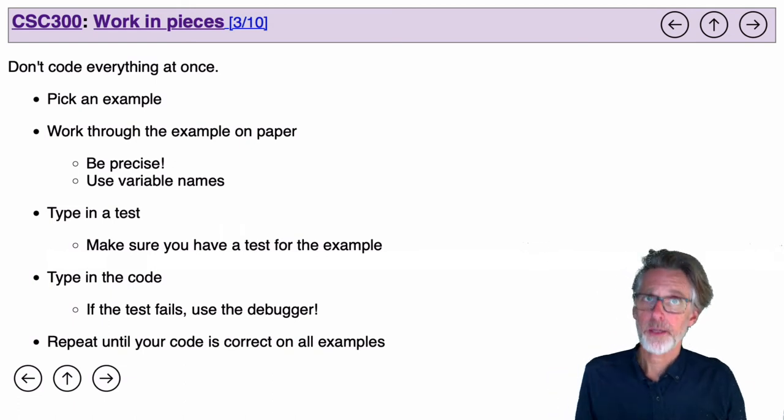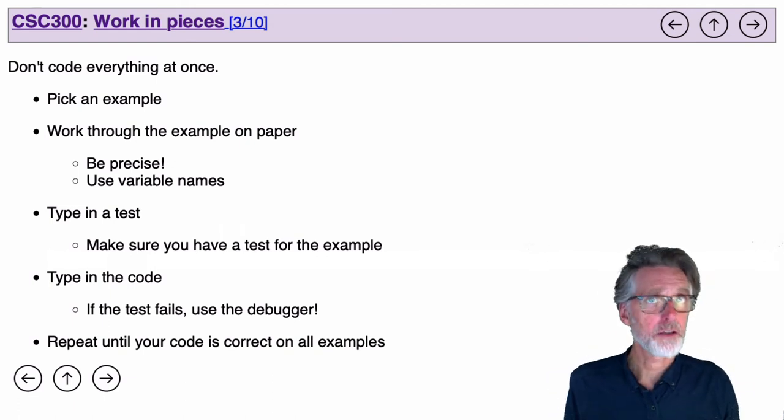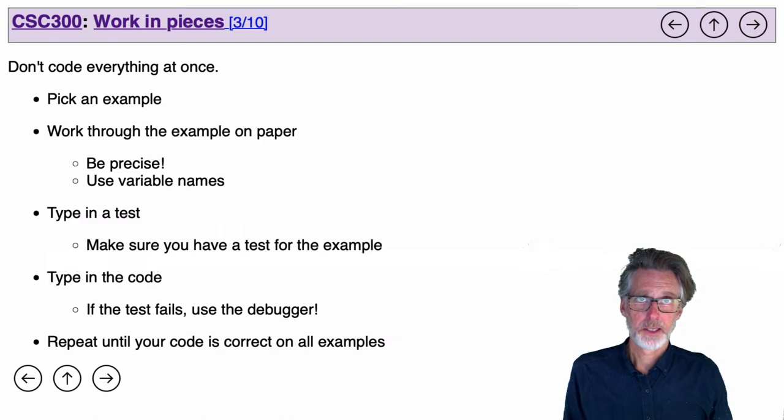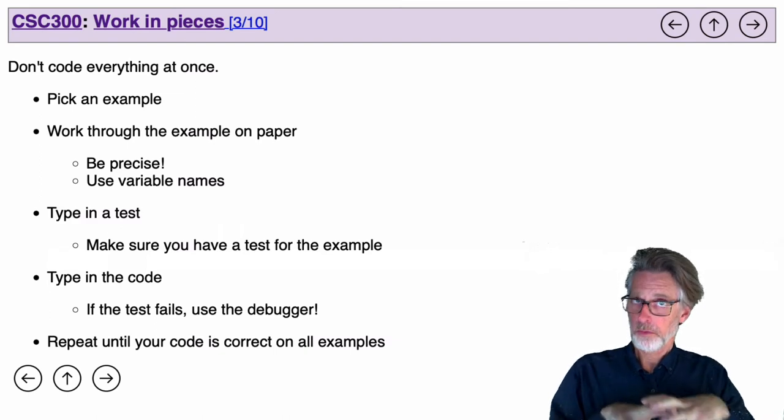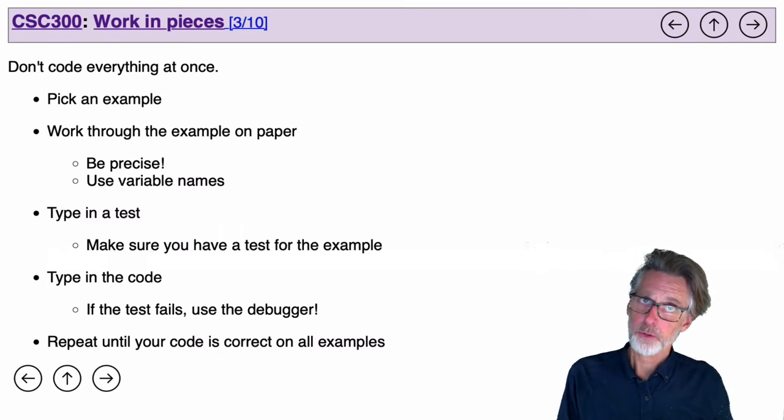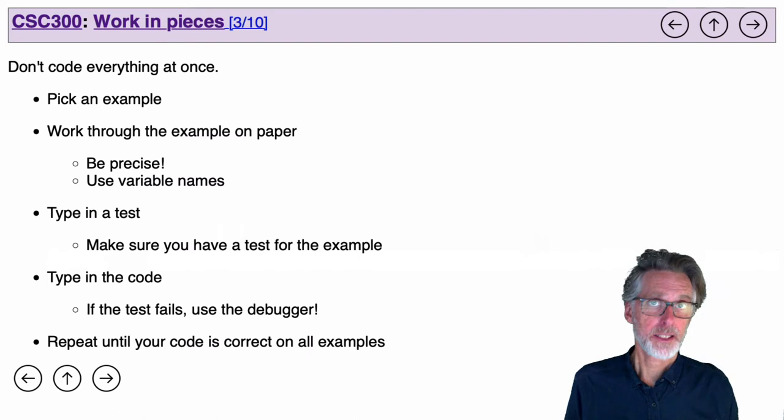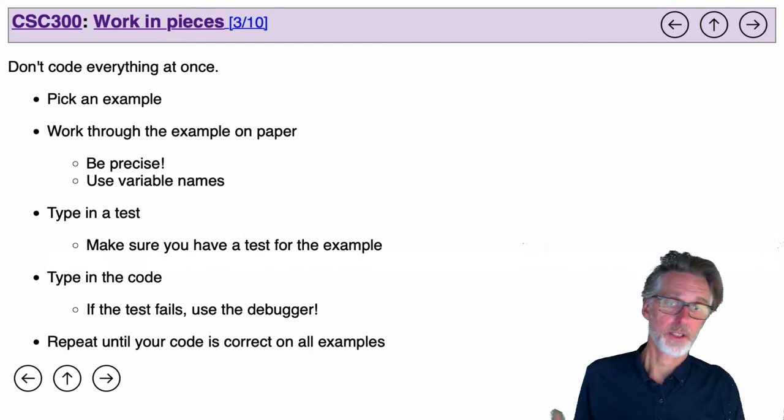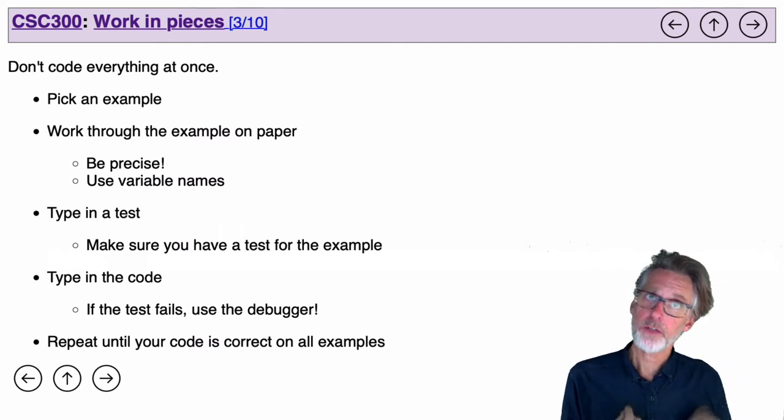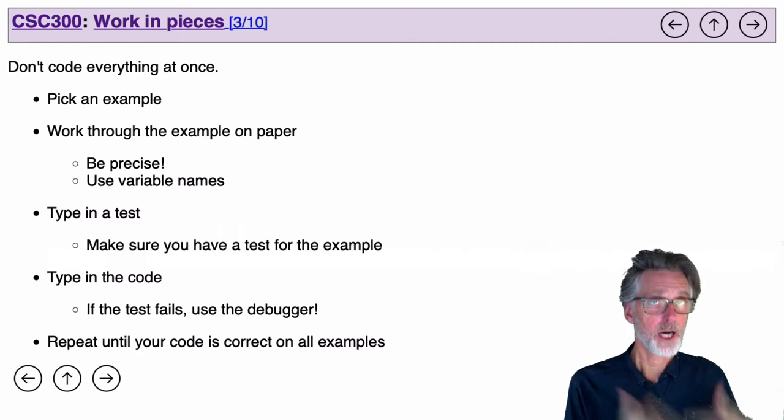In order to program a computer, you need to think like a computer. Then, before you start coding your actual solution, code up a test or make sure you have one. I've given you lots of tests in the homework, so you can often skip this for homework problems. But when you're developing your own code, you want to make sure that you have a test so that you know when you got the code right.